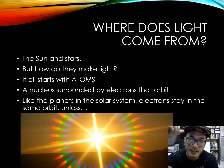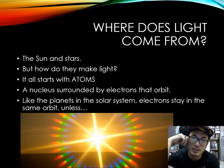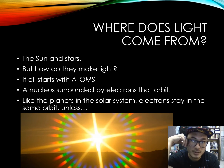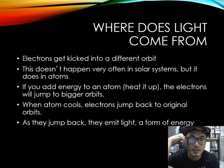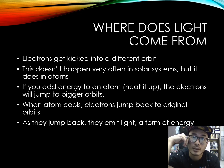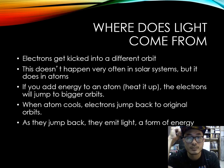Where does the light come from? The light comes from the stars and sun. But how do they make light? It all starts with the atom — a nucleus surrounded by electrons that orbit, like planets in the solar system. An electron stays in the same orbit unless it is kicked into a different orbit. If you add energy to an atom, for example heat it up, the electrons will jump to bigger orbits.